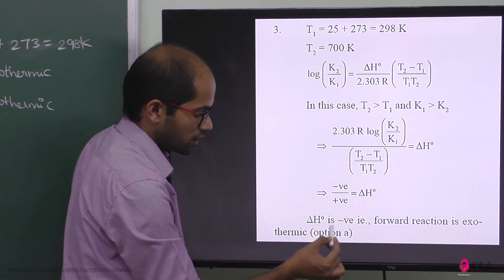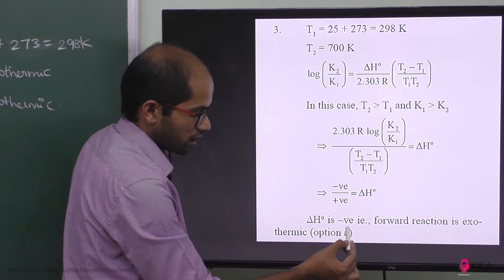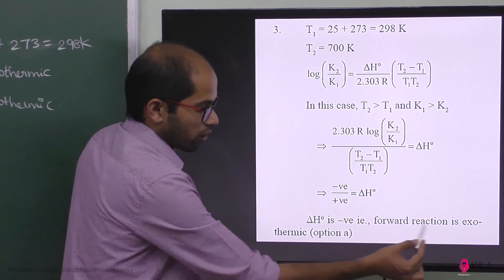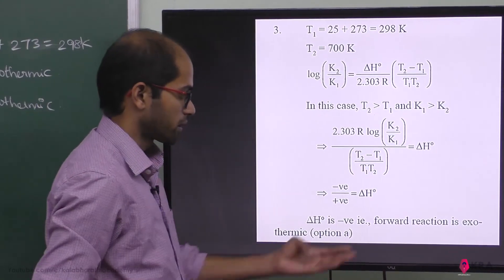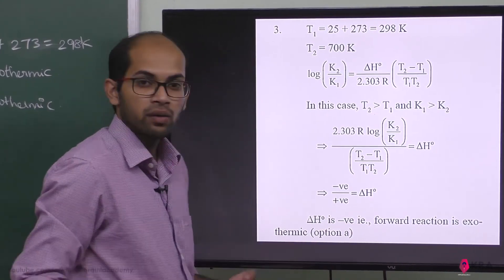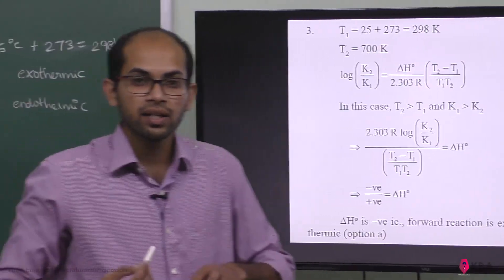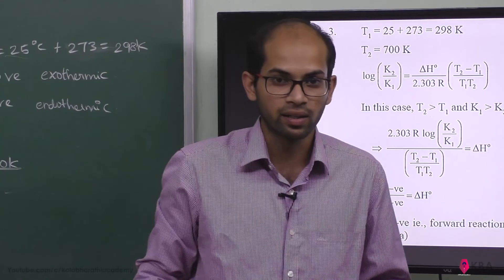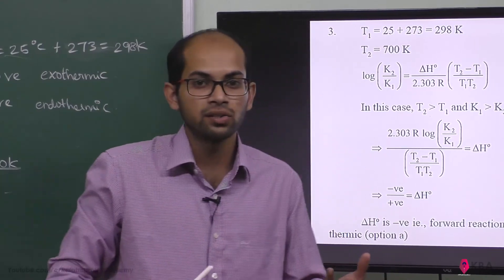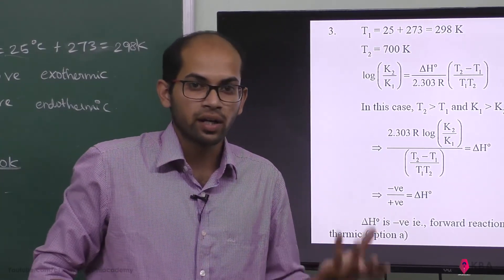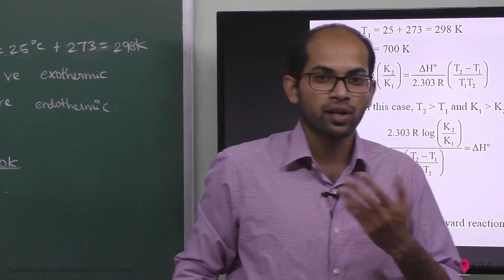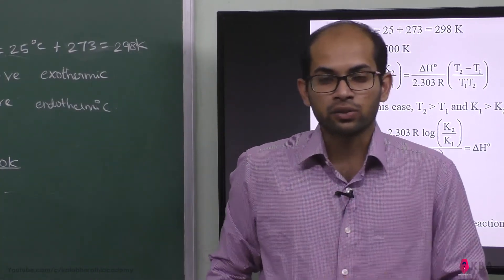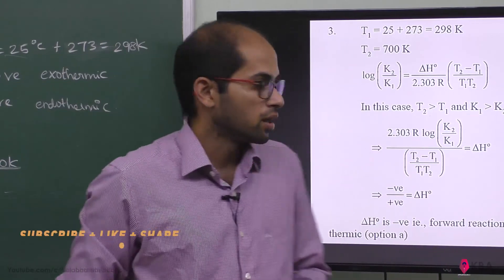Since delta H is negative, this indicates an exothermic reaction. Therefore, the forward reaction is exothermic — which corresponds to option A. A negative delta H confirms that heat is released in the forward reaction.